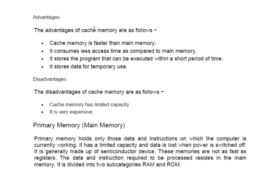The first advantage is that cache memory is faster than main memory — faster than RAM and ROM. It consumes less access time compared to main memory. The next advantage is that it stores programs that can be executed within a short period of time, meaning nanoseconds or picoseconds. Additionally, cache memory stores data for temporary use — whatever data is stored in cache memory is not permanent, similar to RAM which stores data temporarily.